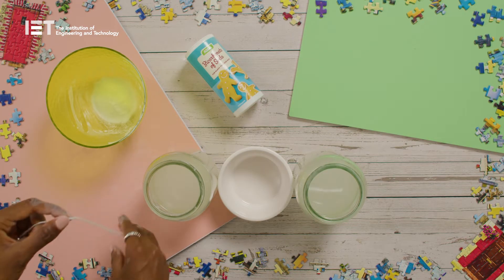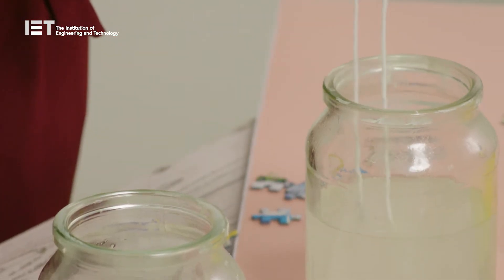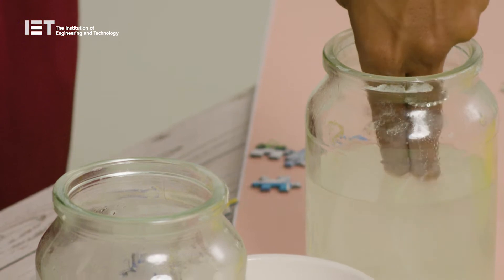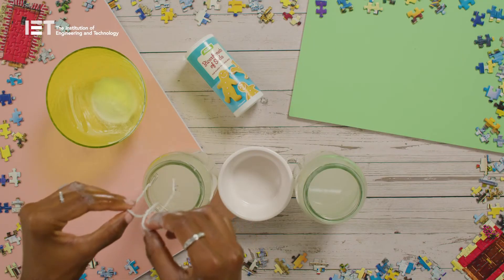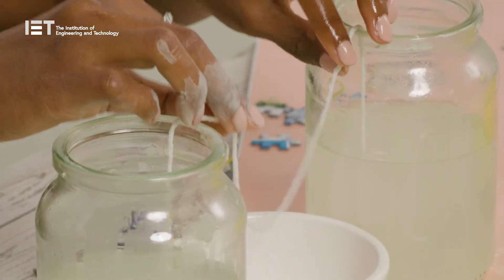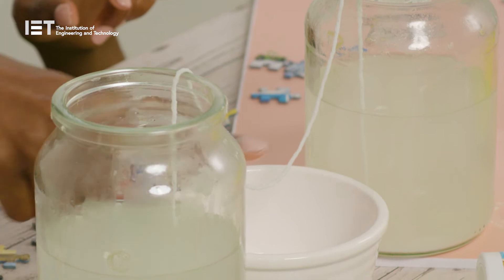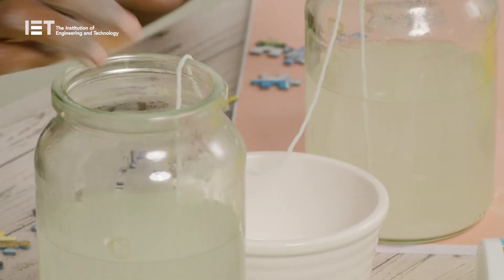Get a piece of wool and tie paper clips to either end. Soak the wool in the bicarbonate solution. Suspend each end of the wool in the jars with a saucer under the thread and leave to rest. Make sure the middle of the wool is lower than the level of the bicarbonate solution in the jars.